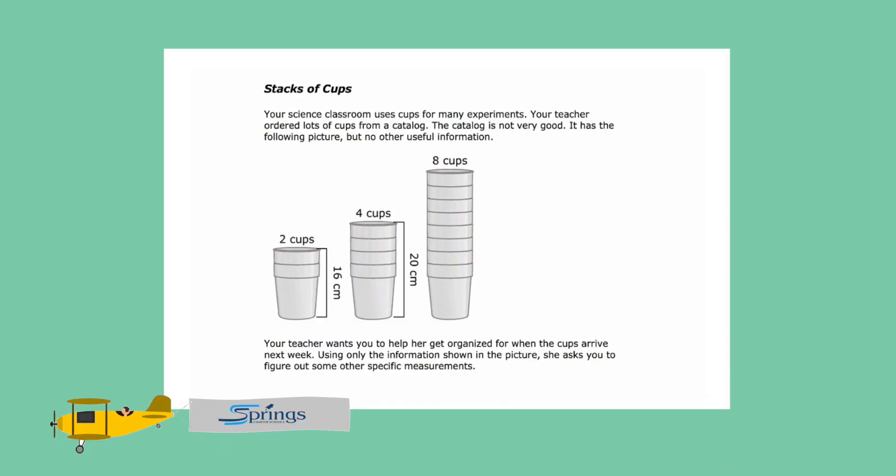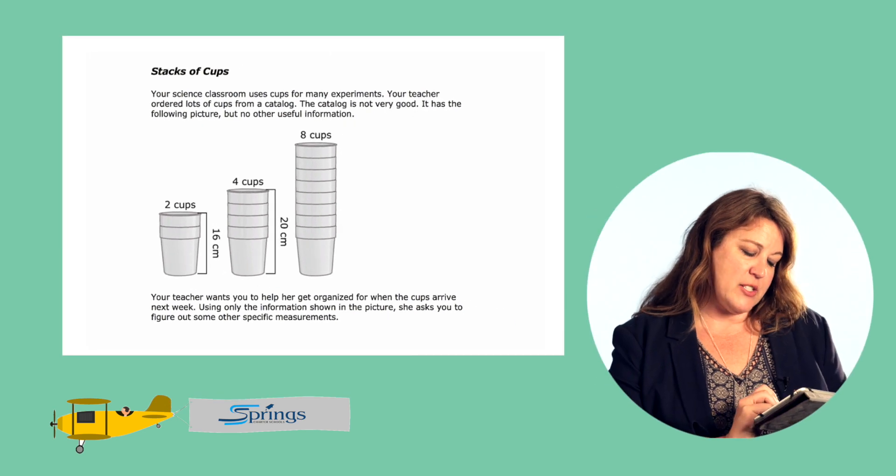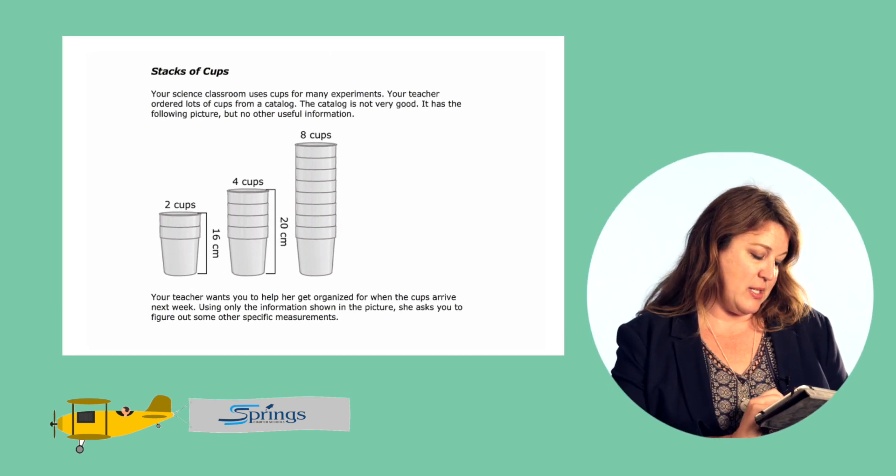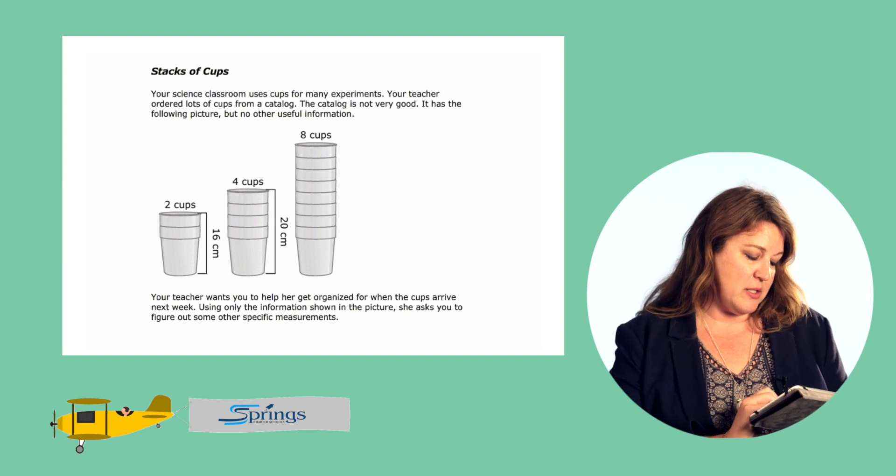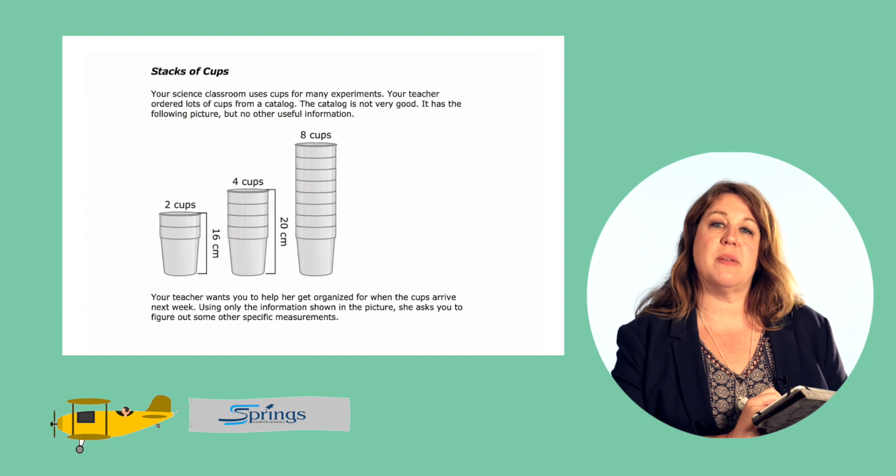Since your science classroom uses cups for many experiments, your teacher ordered lots of cups from a catalog. The catalog is not very good. It has the following picture but no other useful information. Your teacher wants you to help her get organized for when the cups arrive next week. Using only the information shown in the picture, she asks you to figure out some other specific measurements.